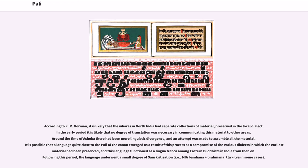According to K.R. Norman, it is likely that the Viharas in North India had separate collections of material preserved in the local dialect. In the early period it is likely that no degree of translation was necessary in communicating this material to other areas. Around the time of Ashoka there had been more linguistic divergence, and an attempt was made to assemble all the material. It is possible that a language quite close to the Pali of the canon emerged as a result, as a compromise of the various dialects in which the earliest material had been preserved, functioning as a lingua franca among Eastern Buddhists in India. Following this period, the language underwent a small degree of Sanskritization.